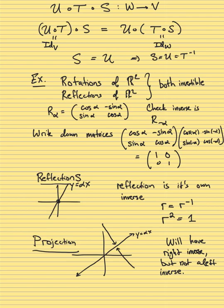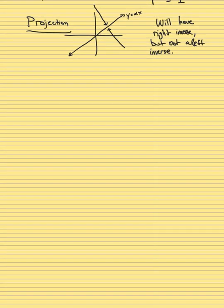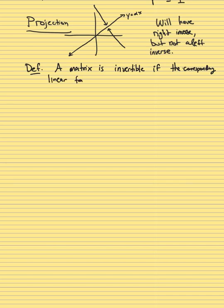This is a useful exercise: go to each of these matrices and try to see what makes the projection not have an inverse, and what makes reflections and rotations have them. We'll see much more of this soon. So let me make this explicit. A matrix is invertible — and similarly left or right invertible — if the corresponding linear transformation is. Since composition is the same as matrix multiplication, this is the same as saying A times A-inverse equals the identity matrix.